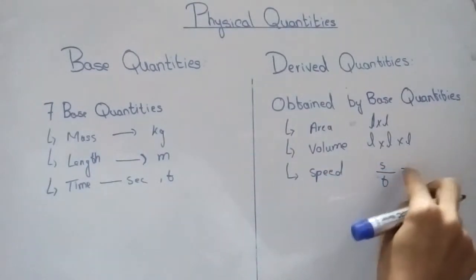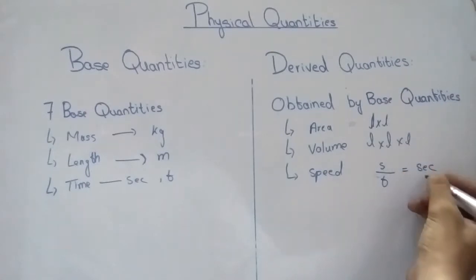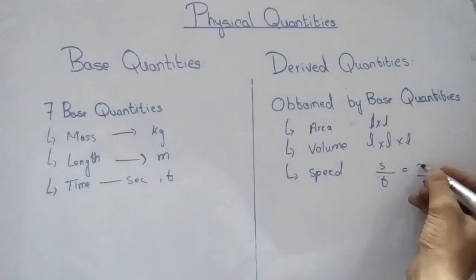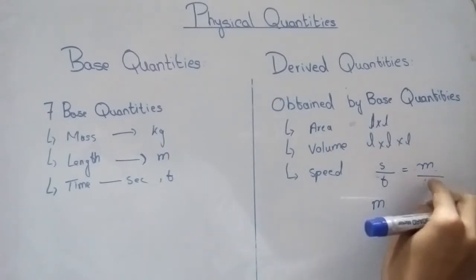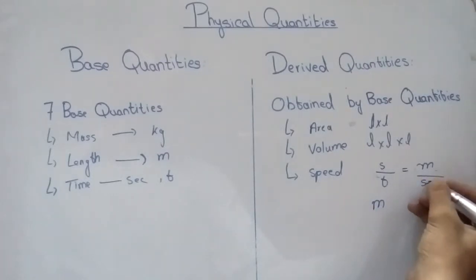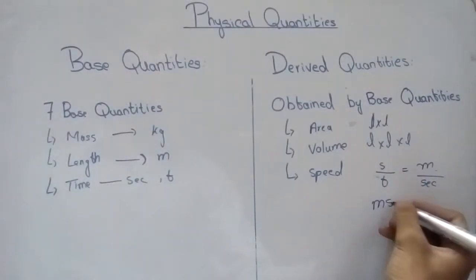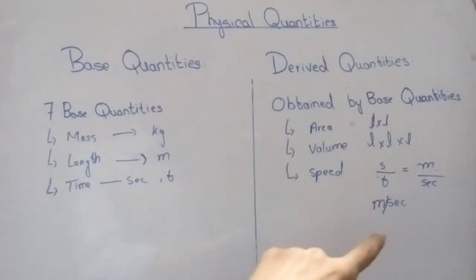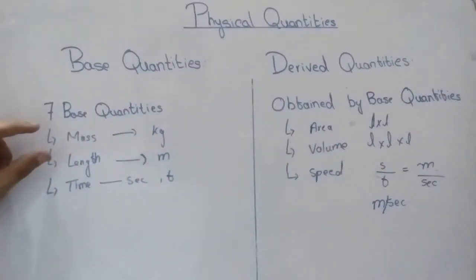The unit of speed is meters divided by second, which equals meter per second. So meter per second is the derived unit for this derived quantity, speed. Here, length and time are the base physical quantities from which speed is derived.